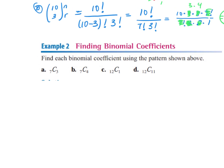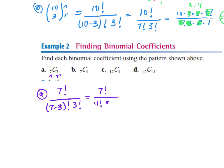This is pretty basic, pretty easy. Let's run through these quickly. For letter A, I have 7 factorial over 7 minus 3 factorial times 3 factorial — which is 7 factorial over 4 factorial times 3 factorial. You do not multiply 4 times 3 to get 12; that's not how it works.